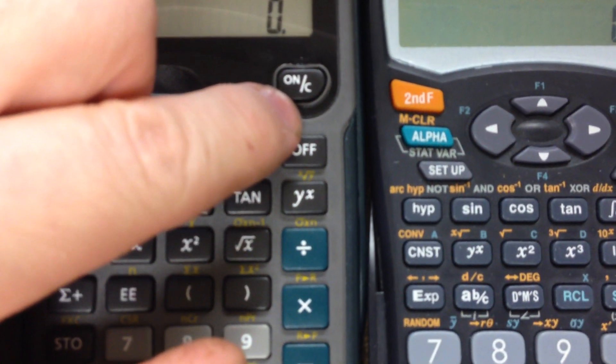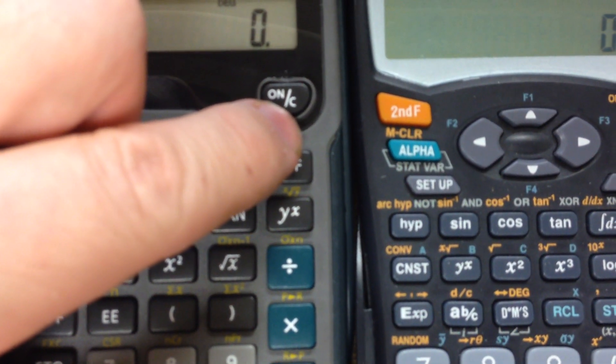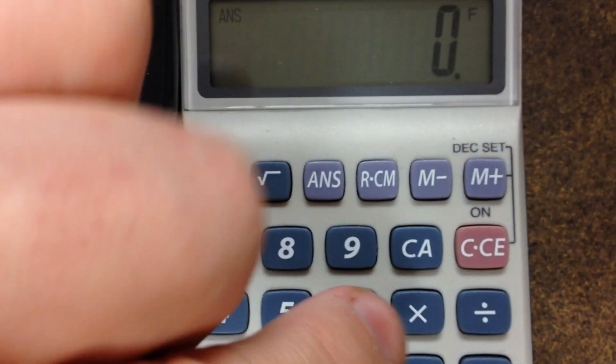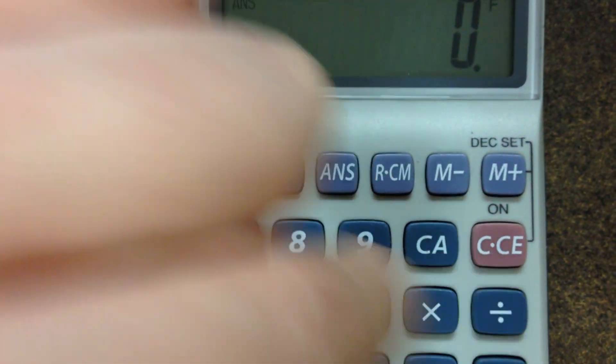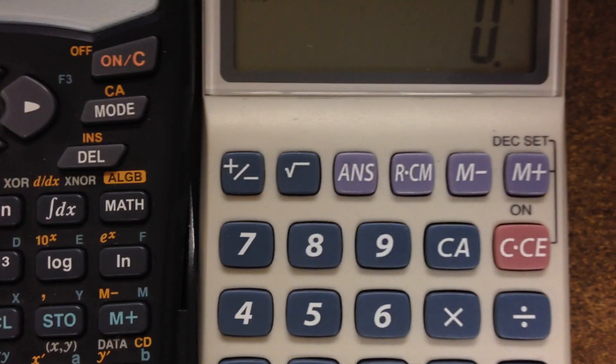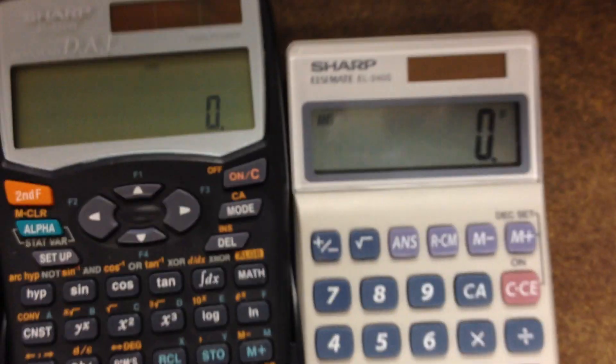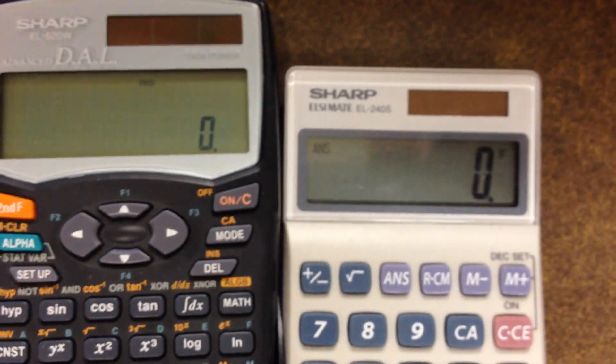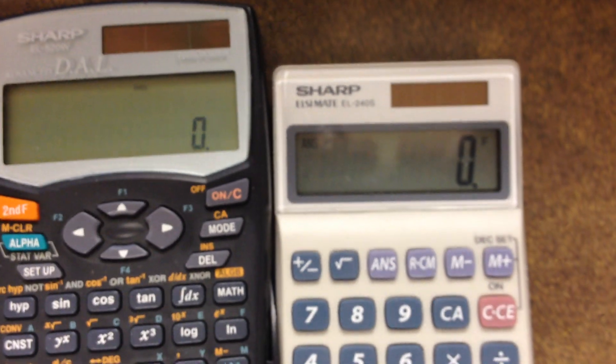Most calculators come with a button that says letter C on it, or C and CA, or CA or CE. I'm going to explain about these a little bit, how they can save you time instead of re-entering everything in the calculator.